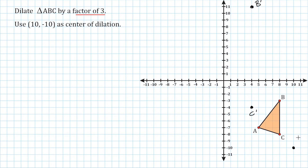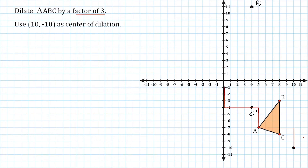Now we have to find the slope between our center of dilation and point A. We go up a distance of three and then to the left five — that's a scale factor of one. We then repeat: up three and left five for scale factor two, and up three and left five again for scale factor three. Now we plot our new point A.